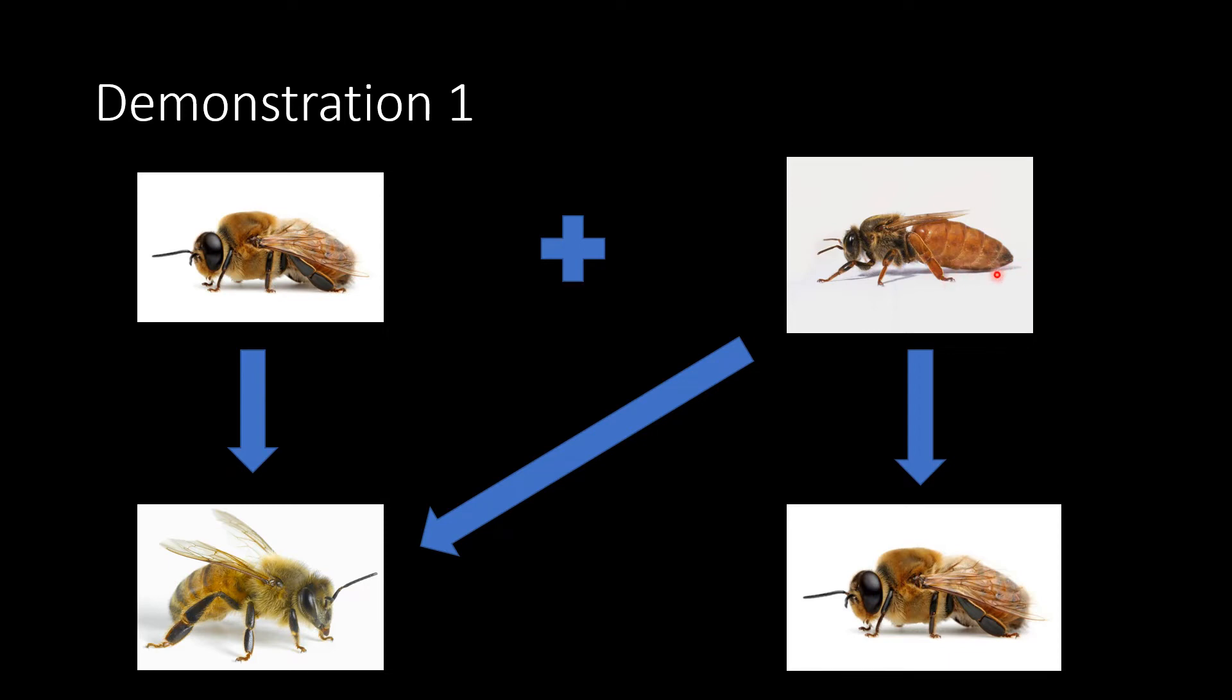She can choose to either release it to fertilize an egg to make a worker bee or she can choose to not fertilize and make a drone bee. So she is in control of whether she wants to make a worker or wants to make a drone.